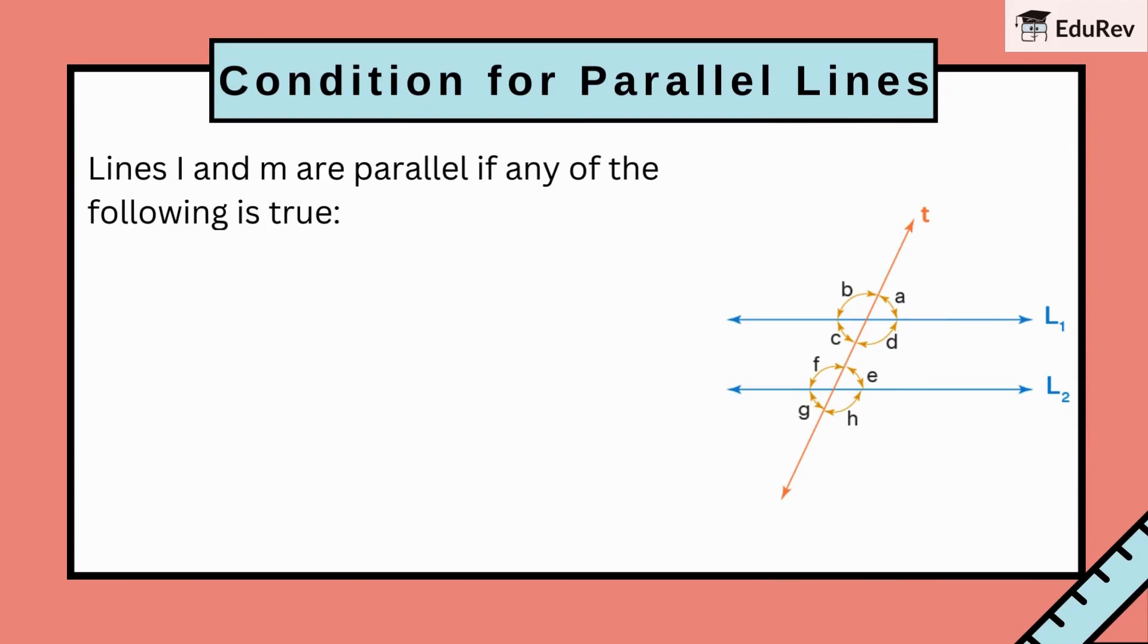Lines L and M are parallel if any of the following is true. Pairs of alternate angles are equal. That is, angle D is equal to angle F, angle B is equal to angle H.